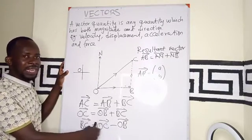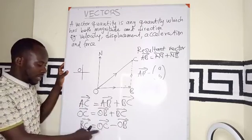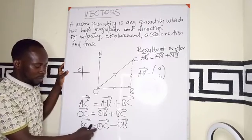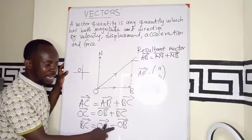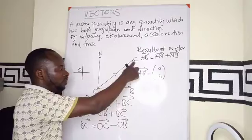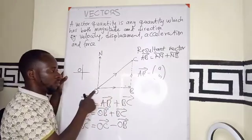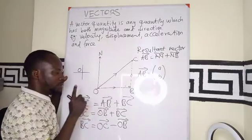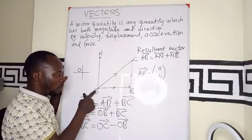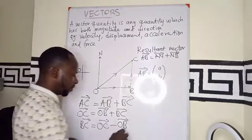So the position vector, that is the distance from C, from the origin. The distance of C from the origin minus the distance of B from the origin. This is going to be the distance from the origin to C minus the distance from the origin to B. As we call a position vector.